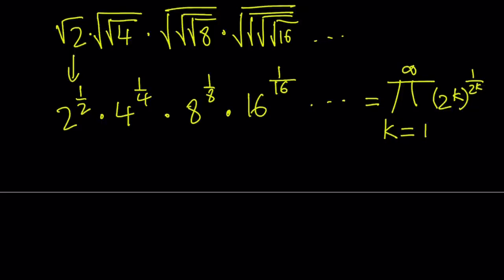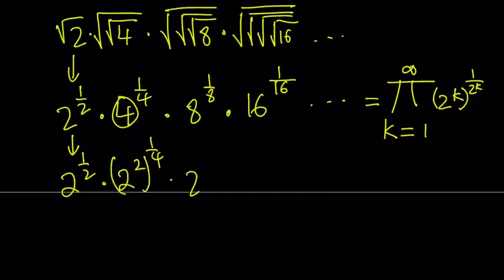Now since we're multiplying powers of 2 here — 4, 8, and 16 are all powers of 2 — all of these numbers can be written as powers of 2. It's important not to simplify any of the exponents. Since 4 is 2 squared, we write this as 2 squared to the power 1 fourth. And this can be written as 2 to the third to the power 1 eighth, then 2 to the fourth power to the power 1 over 16, so on and so forth.